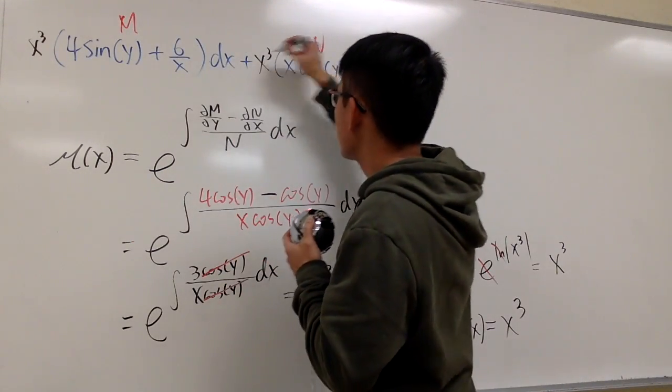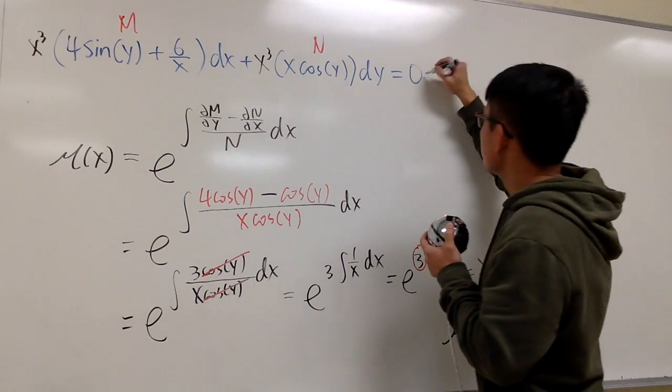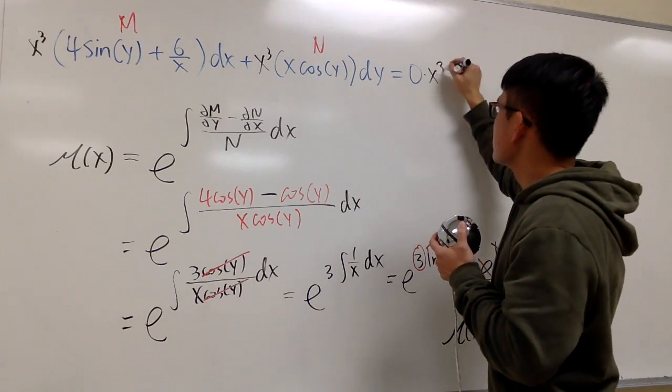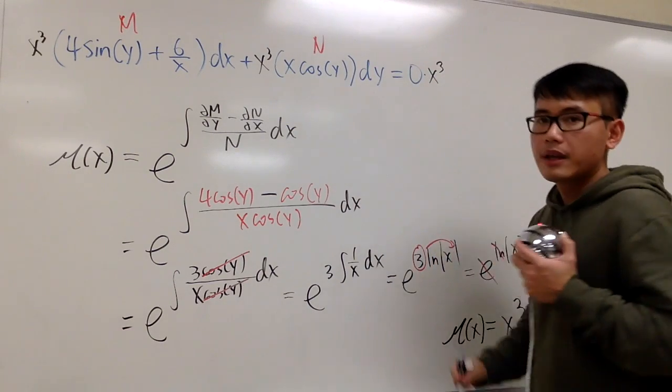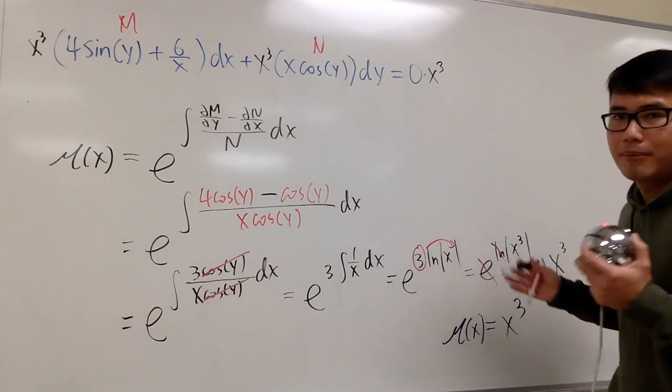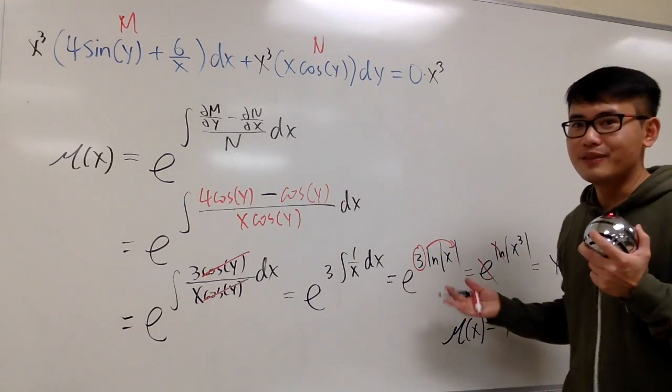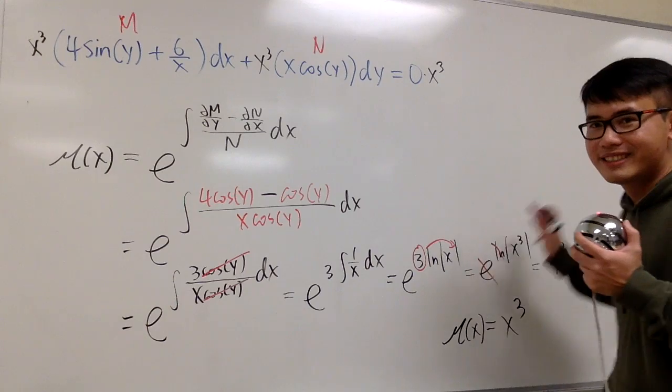So we go back to our original equation and multiply everything by x³ — putting x³ in front — and now we can solve this using the standard exact equation procedure.